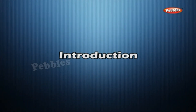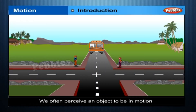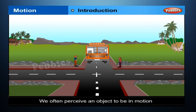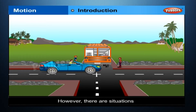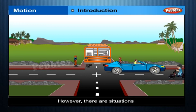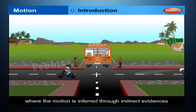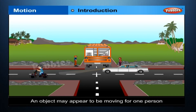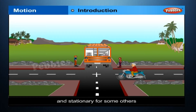Motion — Introduction. We often perceive an object to be in motion when its position changes with time. However, there are situations where the motion is inferred through indirect evidences. An object may appear to be moving for one person and stationary for some others.